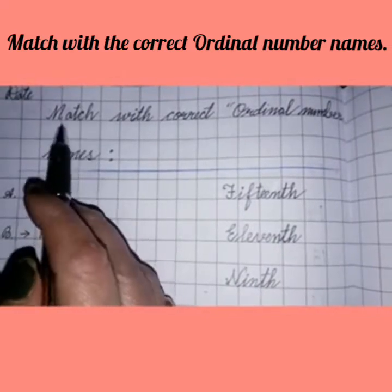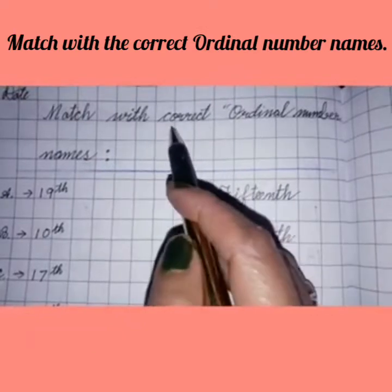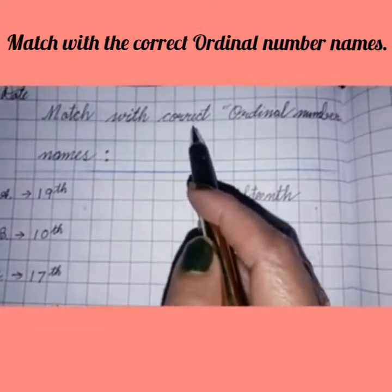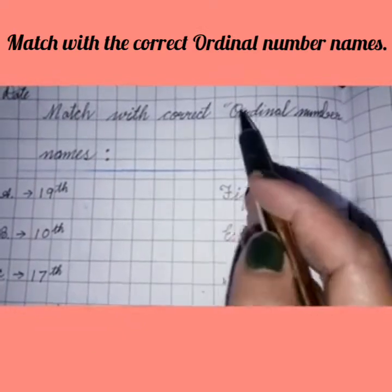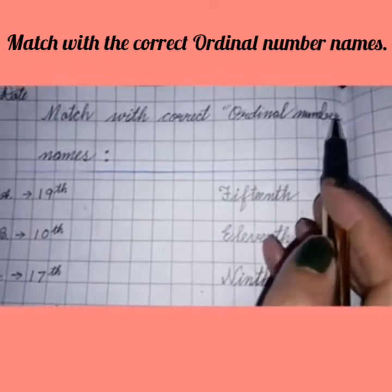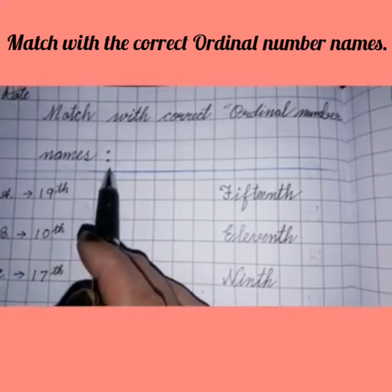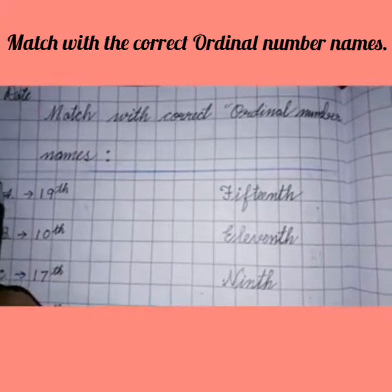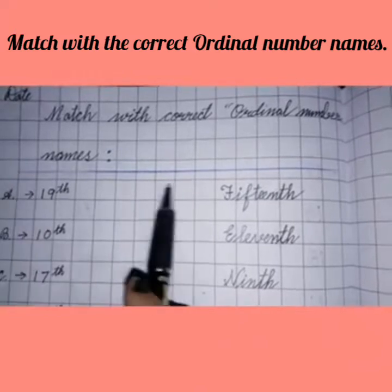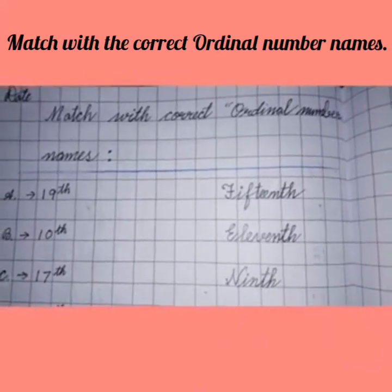M-A-T-C-H match. W-I-T-H with C-O-R-R-E-C-T correct. O-R-D-I-N-A-L ordinal N-U-M-B-E-R number N-A-M-E-S names. And put the colon here. And after writing the heading, you will underline this.